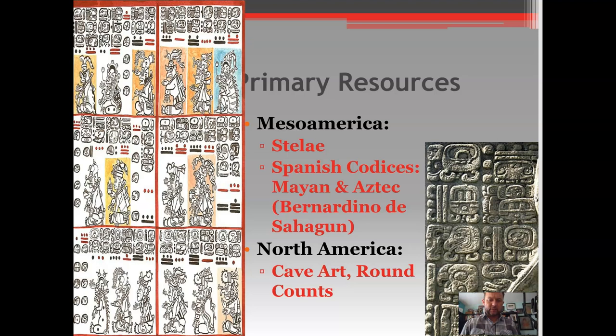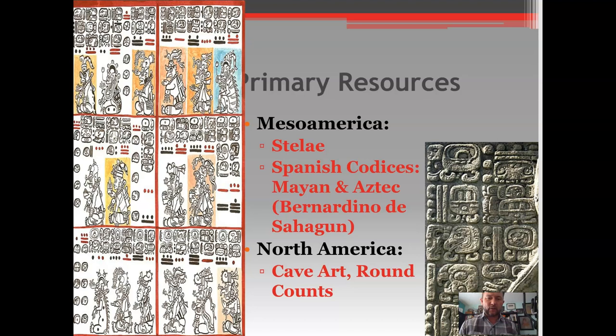For example, you might see the number eight — meaning eight years later — then a person wearing Tlaloc's war goggles, usually representing a Maya, stomping on a person with Quetzalcoatl's feathered headdress, representing a central Mexican tribe. The stela is essentially saying: eight years later, the Maya triumphed over this rival, such as a Zapotec or other tribal enemy.